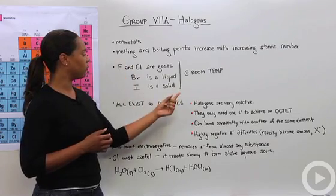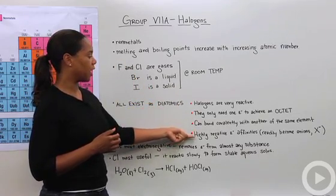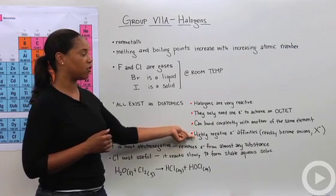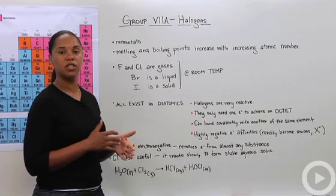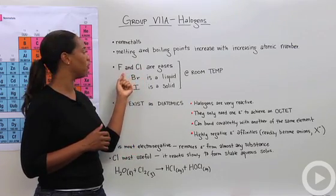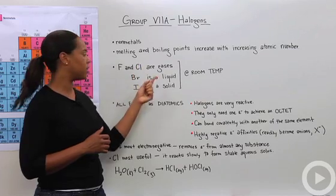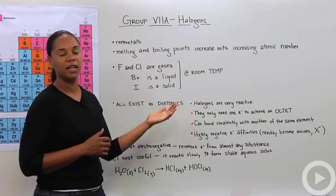They also have highly negative electron affinities, so they'll readily become anions, which is the negative form of themselves. Fluorine will become a minus, chlorine a minus, bromine a minus, and iodine a minus, because that indicates that they've gained that electron that they needed to fill their octet, and that makes them more stable.